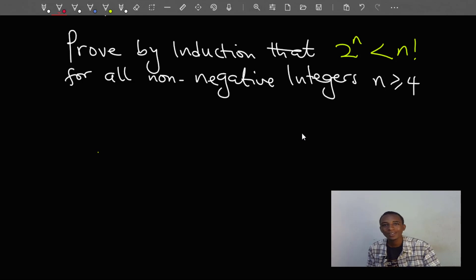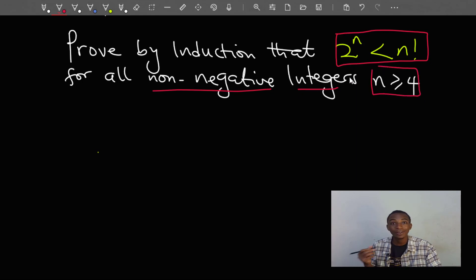Hello math fans, welcome to another video. For this one we'll be doing this nice problem. It's a proof by induction that the proposition 2 to the power n is less than n factorial for all non-negative integers n greater than or equal to 4.